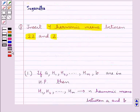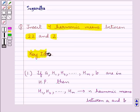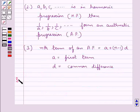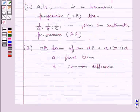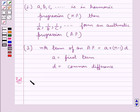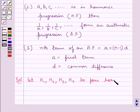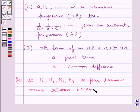This is the key idea that we use for this question. Let's now move on to the solution. We are supposed to insert 4 harmonic means between 22 and 2. So let H1, H2, H3, and H4 be 4 harmonic means between 22 and 2.